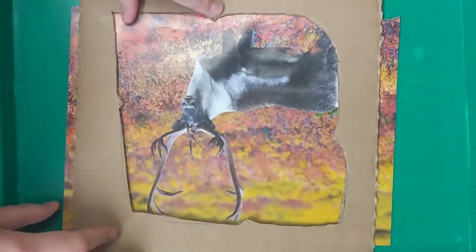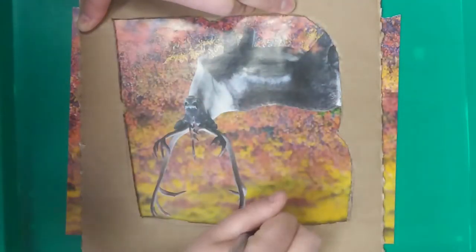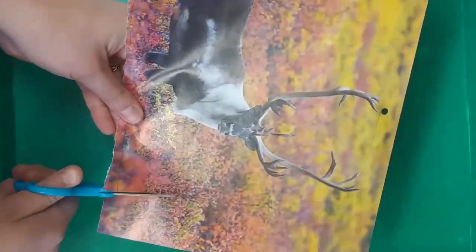All right, this pointy part, that's the top. The square inside, that will be the face of your envelope, so line up the template to best show off the picture you chose.